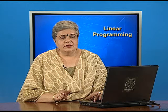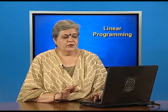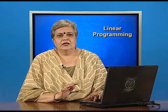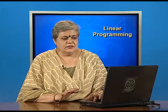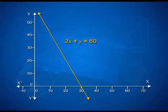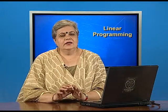To decide the feasible region, we start with a graph paper and choose a suitable scale so that we can represent all the constraints properly. We first plot the straight line 2x plus y equals 60, then the other two lines: x equals 20, and 2x plus 3y equals 120. To decide the feasible region, recall what you learned in grade 11 — how do we decide the region which represents the solution region of a linear inequality?